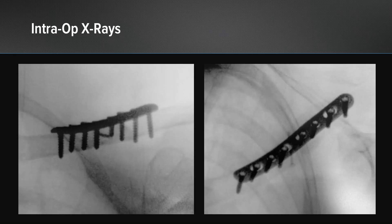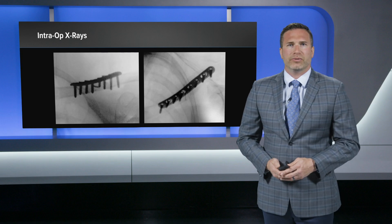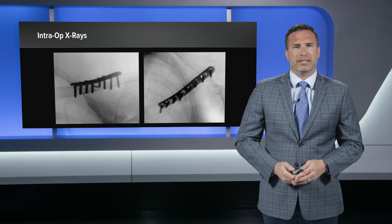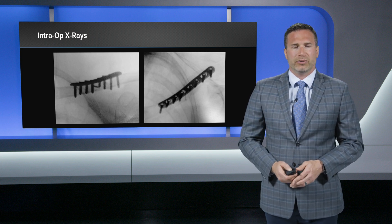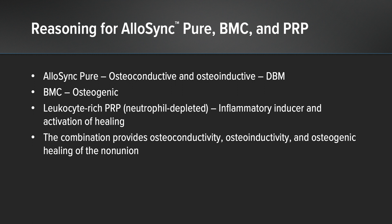These are the intraoperative x-rays. I used a superior plate and typically use a 2.0 lag screw — this is my go-to screw fixation to really hold the two ends together after I osteotomize and clean them up to get good bleeding bone. The reasoning for the biologic augmentation with AlloSync and bone marrow concentrate: AlloSync is both osteoconductive and osteoinductive, while the bone marrow concentrate has osteogenic properties. Together, those three properties are all that we want and search for in order to heal the fracture.